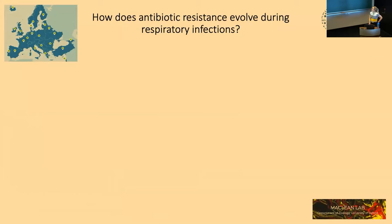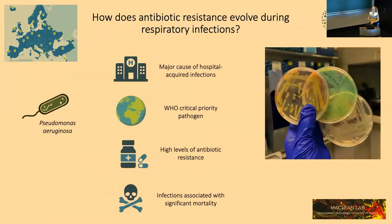This makes understanding how antibiotic resistance evolves during respiratory infections an important question. The research story I'm going to present is from my postdoc in the lab of Craig McLean in Oxford, where we were part of a large-scale clinical trial called COMBACTA — Combating Antibiotic Resistance in Europe — a large-scale collaboration involving hospitals all over Europe. We were interested specifically in how antibiotic resistance is evolving in the opportunistic bacterial pathogen Pseudomonas aeruginosa.